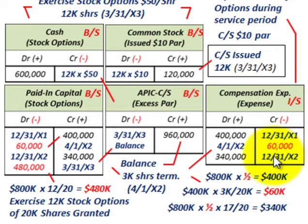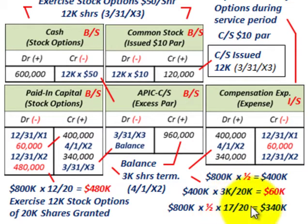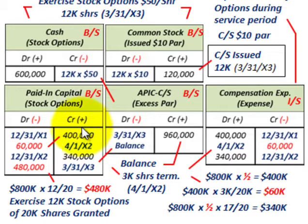At the end of 12/31/X2, we debit compensation expense for $340,000. We had the total $800,000 of expense, one half of which applies to the second year. But we only have 17/20ths of the options remaining — we terminated 3,000 of the 20,000, leaving 17,000 options. So 17/20ths times one half times $800,000 equals $340,000. We debit compensation expense for $340,000 and credit paid-in capital for stock options for $340,000.